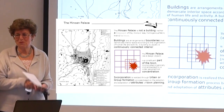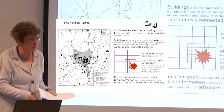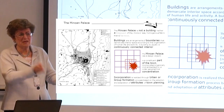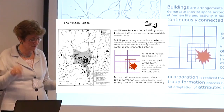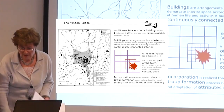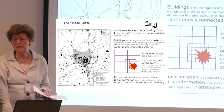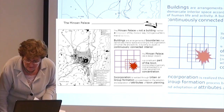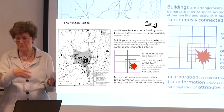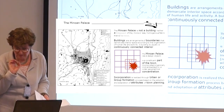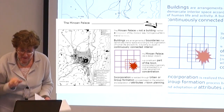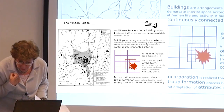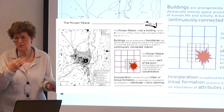The Minoan Palace is notoriously difficult to describe, to define, to typologize — it is very resistant to typology. One way to approach it is by what it is not. The Minoan Palace is not a building — I absolutely insist on that. And neither is it part of the town in the sense of a fragment of the homogeneous fabric of the town. A building is an arrangement of boundaries that demarcates interior space according to the organization of human life and activity, usually a continuously connected interior. Even according to this kind of definition, the palace does not fit well.